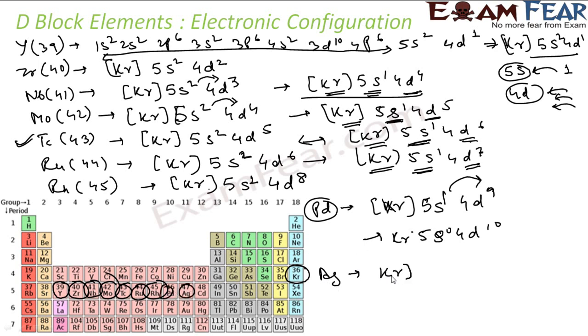Then we have silver, Ag. Ag is what? 47. So krypton will take 36, 5s will take 1, 37. 5s will take 1, 37, 4d will take 10, one is more extra way to put, so one will go here.